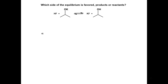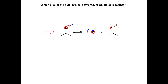Determine which of the following acid-base reactions will not favor the products. First, put lone pairs and charges on the atoms and identify the acids and bases on both sides of the reaction. For the forward reaction, identify the acid and the base. The base has electrons to donate and accepts the proton. The acid will accept the electrons and donate its proton to the base.